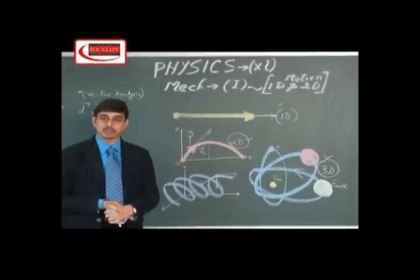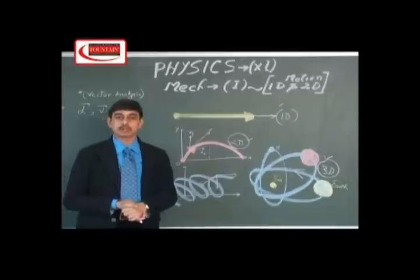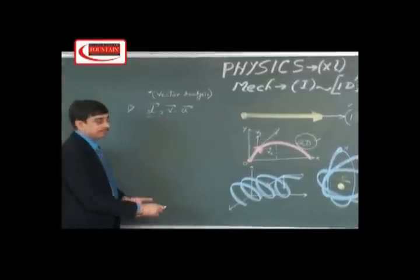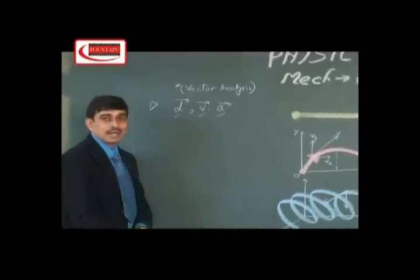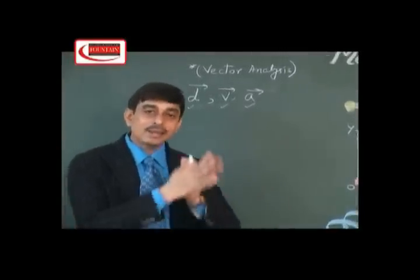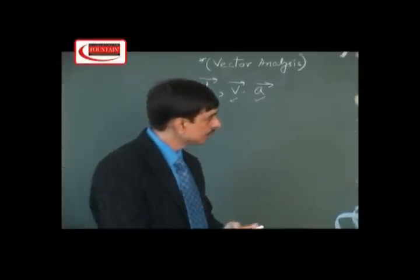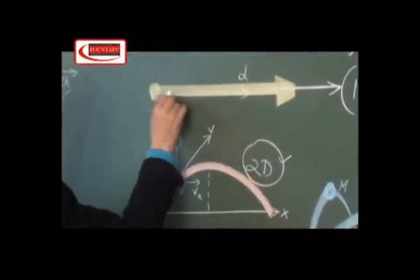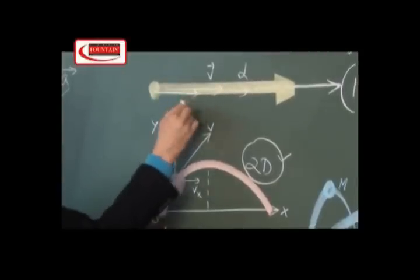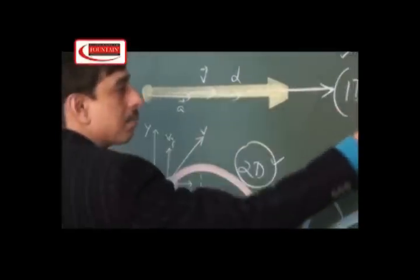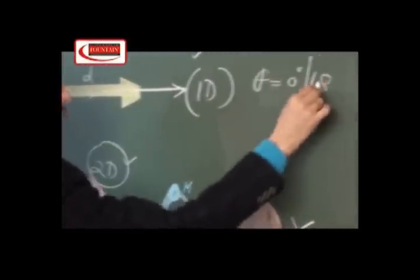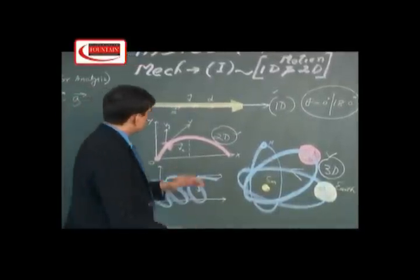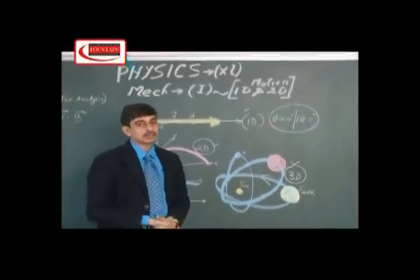As per Newtonian physics, where time is not a dimension, x, y, and z are the three dimensions of the universe. Dimensional analysis takes place with respect to the vector concept. The three vectors — displacement, velocity, and acceleration — decide the understanding of motion. If motion is in one dimension, then the directions of displacement, velocity, and acceleration make angles of either 0 degrees or 180 degrees between them.